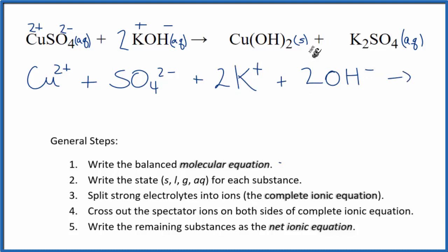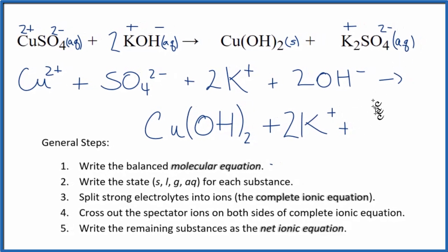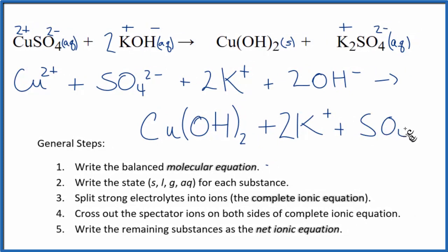For the products, we don't split solids apart when we do net ionic equations. So we're just going to write Cu OH2. Keep that together. Plus, we said we have a 1 plus and a 2 minus here, so we'll put K plus, but the 2 here means we have two of those. Then we have just the sulfate. That's the SO4 2 minus. So those are the ions.